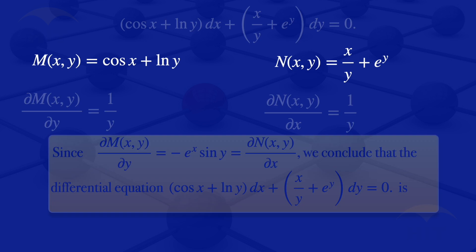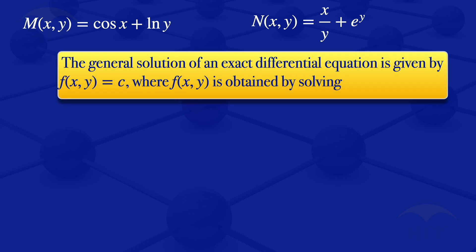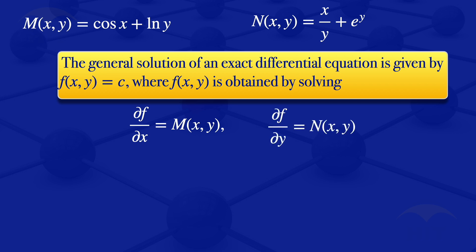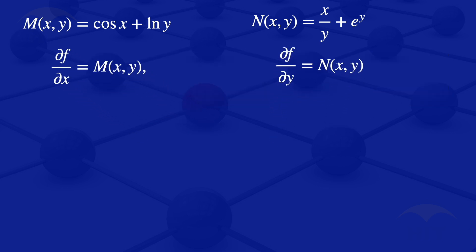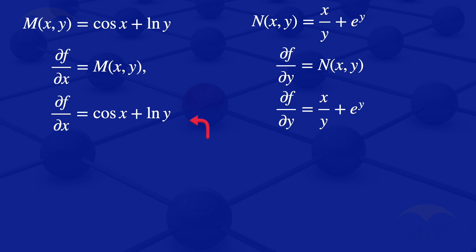Since they are equal, the given differential equation is exact. The general solution of an exact differential equation is given by f(x,y) equals c, where f(x,y) is obtained by solving: partial derivative of f with respect to x equals M, and partial derivative of f with respect to y equals x divided by y plus e^y. I'll label this equation number 2.